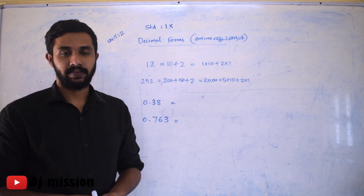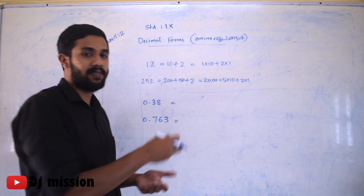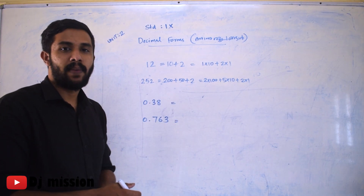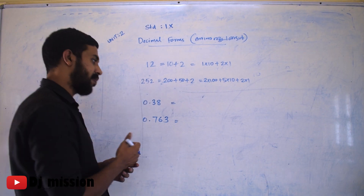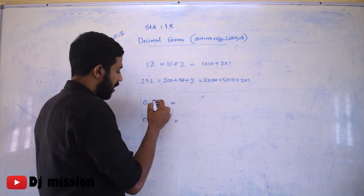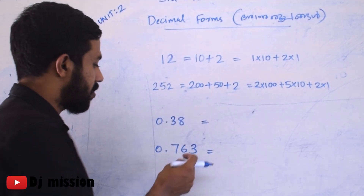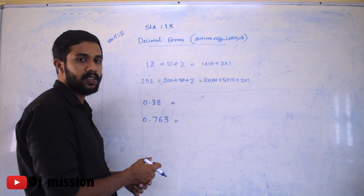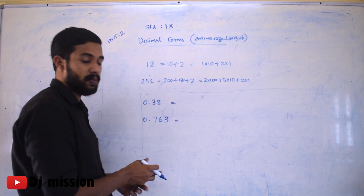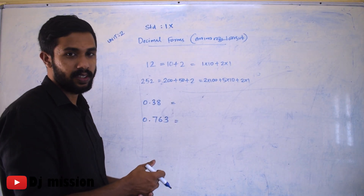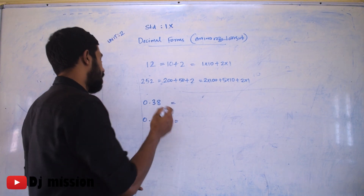Now let's go to decimals. The decimals place values — where are we going? 0.38 and 0.763 — two numbers are there. These are decimal forms.